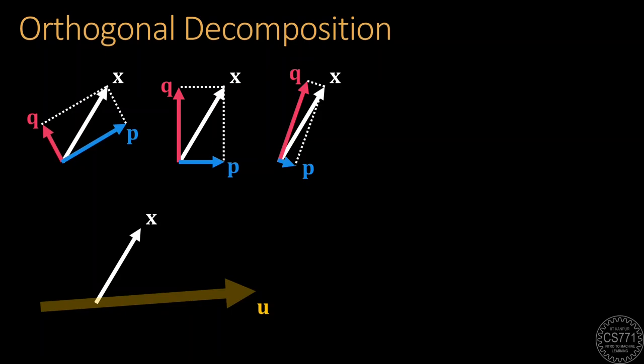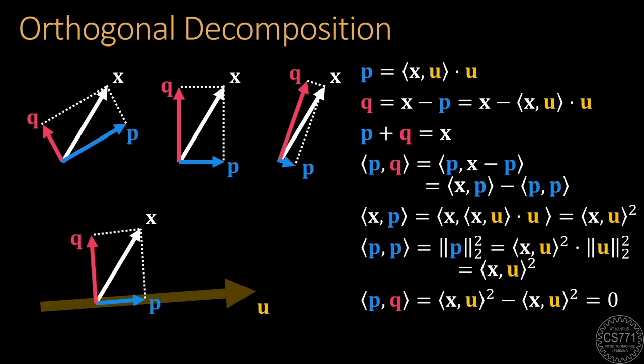This is simply given by the dot product X dot U. Check out the video linked above if you wish to brush up your geometry basics. Which means, the vector P is simply X dot U times the vector U. The vector Q is found out by subtracting P from X. We can easily verify that P plus Q is indeed equal to X and that P is perpendicular to Q.